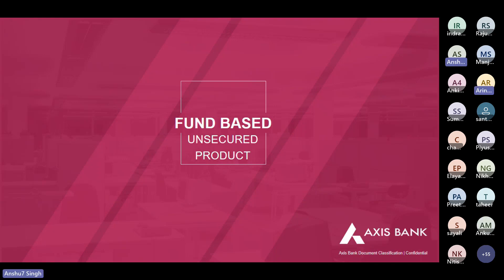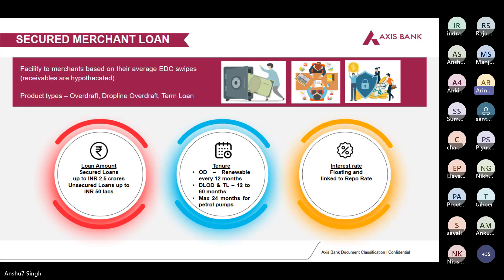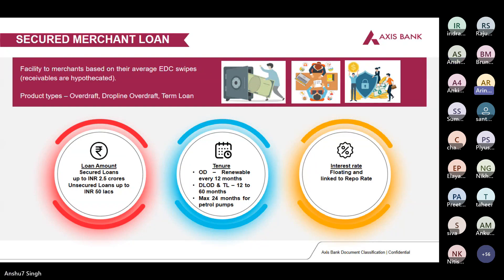Regarding EDC machines: the rule is that the merchant must have an Axis Bank EDC machine. We allow one additional machine as a contingency in case the Axis machine is not working. Exception: an American Express machine is also allowed alongside the Axis machine.